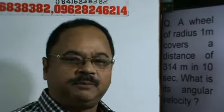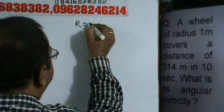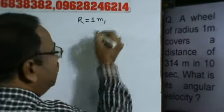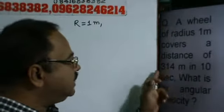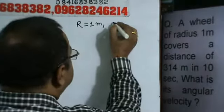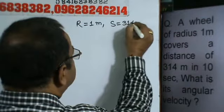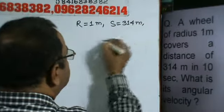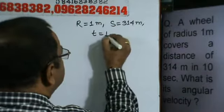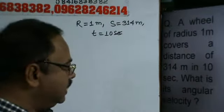This is a very simple problem. A wheel of radius 1 meter — so we can write radius of wheel is equal to 1 meter. It covers a distance, S, equal to 314 meters, and time is equal to 10 seconds.